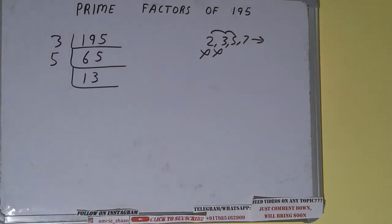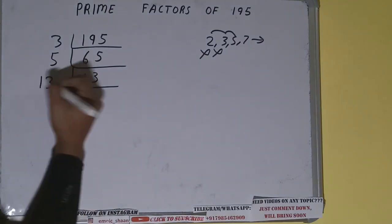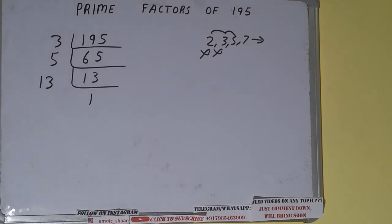Is 13 further divisible by 5? The answer is no, because 13 is itself a prime number. So 13 is only divisible by itself, that is 13, and once we do so, we'll be getting one.